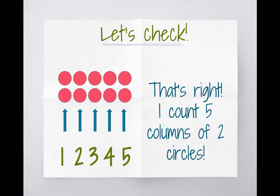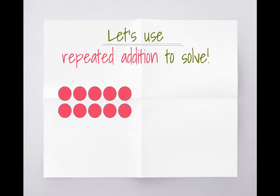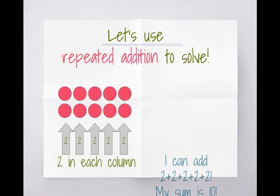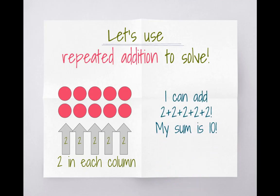Count with me as I count the columns: one, two, three, four, five. We have five columns of two circles. Let's use repeated addition to solve. We have five columns and each column has two circles in it, so that looks like two plus two plus two plus two plus two equals ten.